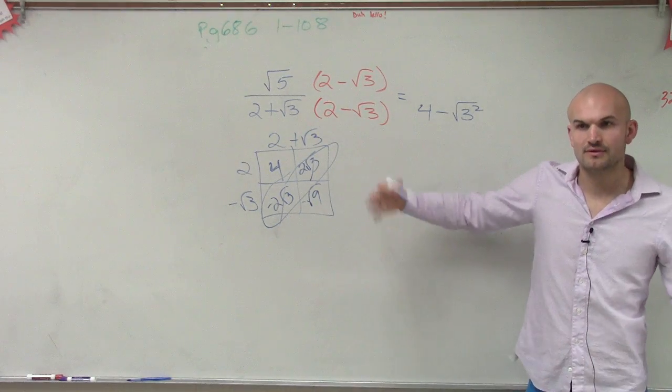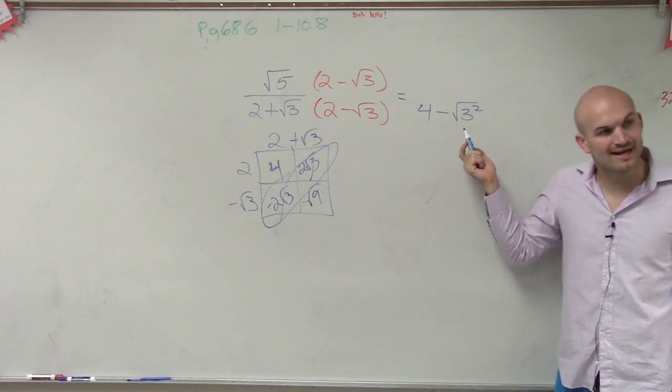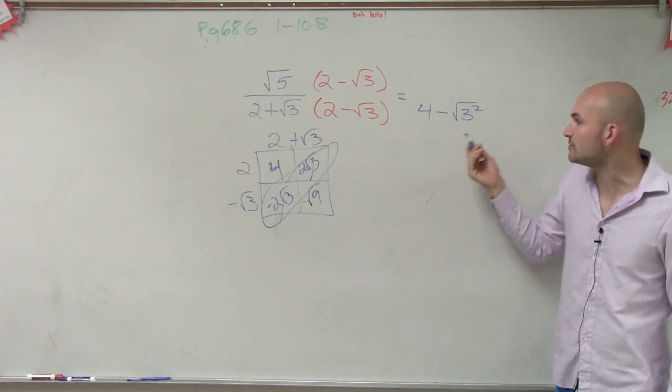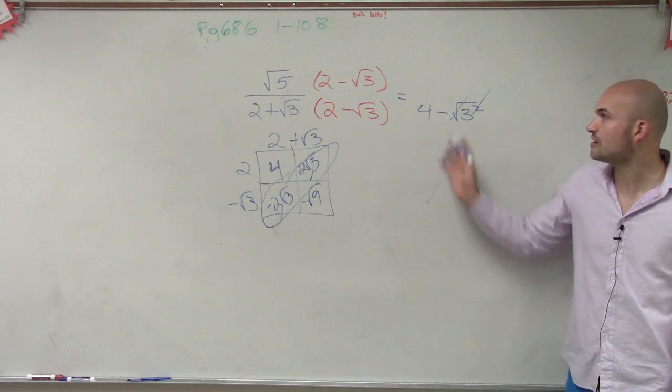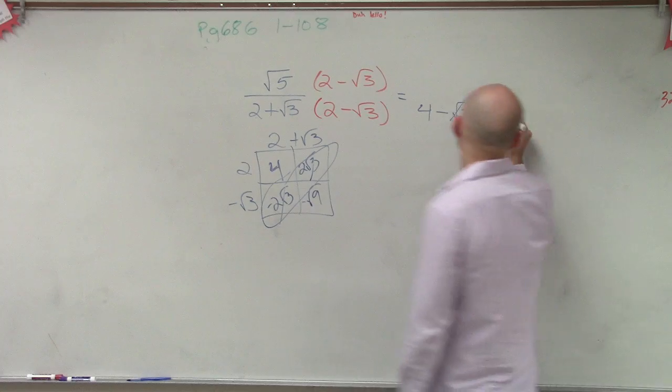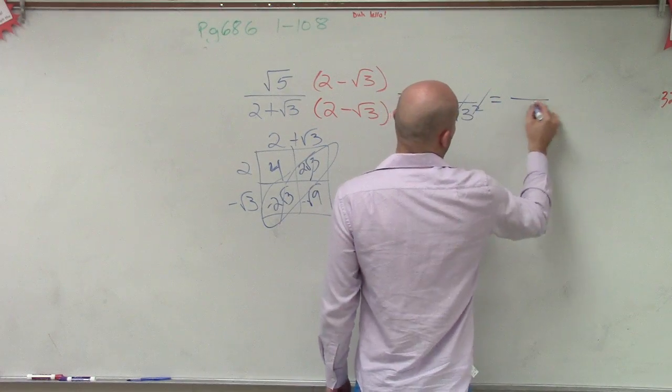Then I just have 4 minus the square root of 9. Well, what's the square root of 9? 3. Or you can rewrite it. Or instead of just writing 9, you can write square root of 3 squared, which you know that the square root and the square eliminate each other. So therefore, I'm just left with 4 minus 3, which equals 1.